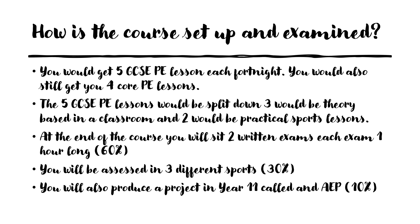This slide shows you how the course is set up and how you'll be examined at the end of GCSE PE. If you choose GCSE PE, you'll get five lessons of GCSE PE a fortnight, plus your four core PE lessons on top of that. The five GCSE PE lessons will be split: three will be theory lessons based in a classroom, and two will be practical sports lessons. At the end of the course you will take two written exams, both one hour each, adding up to 60% of the course. You'll also be assessed in three different sports.